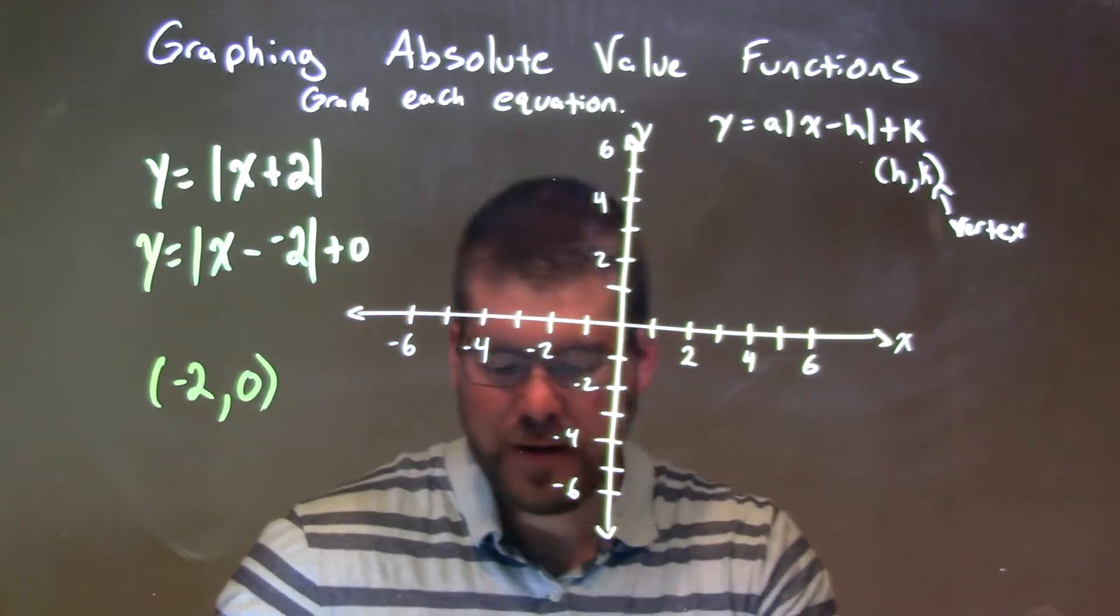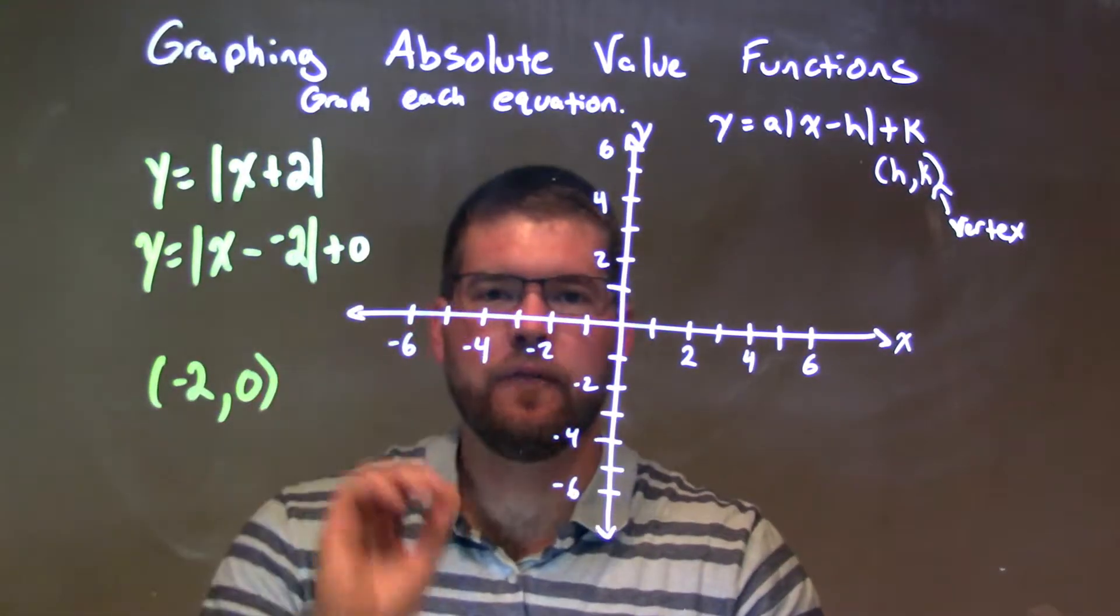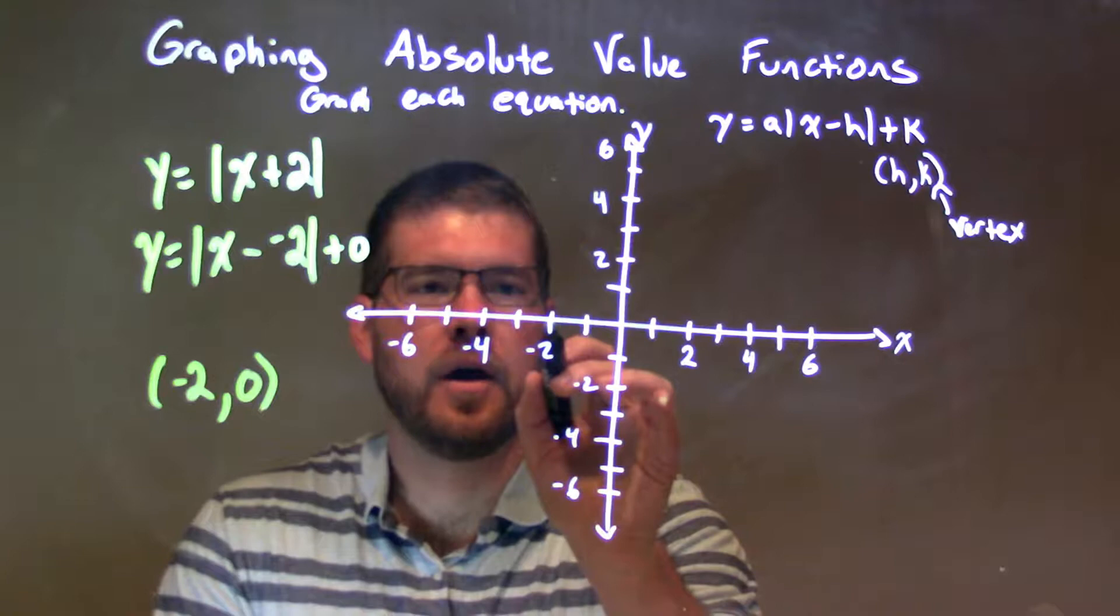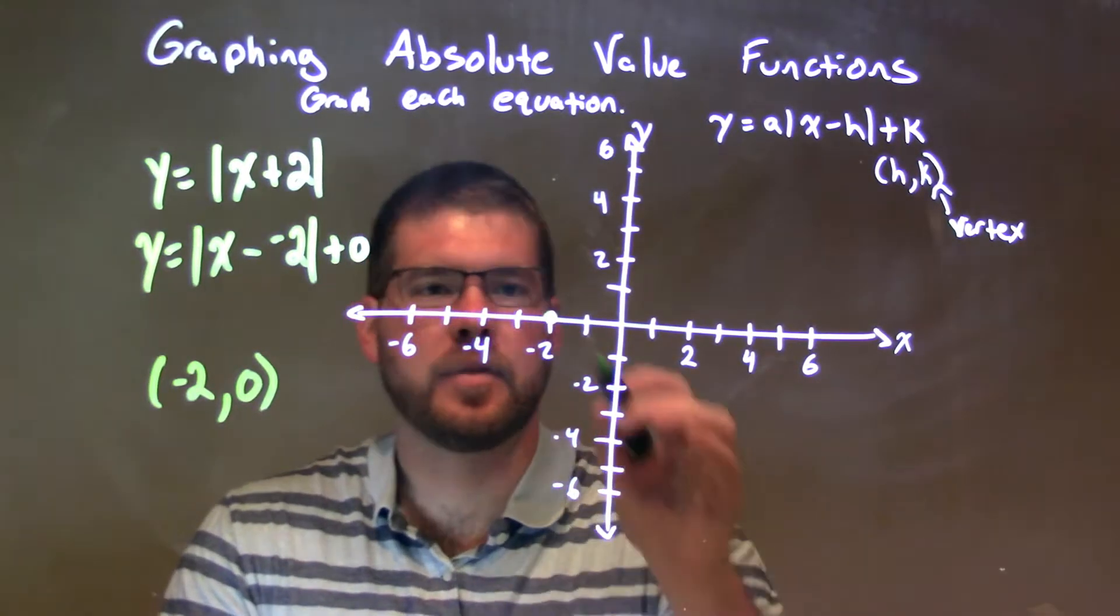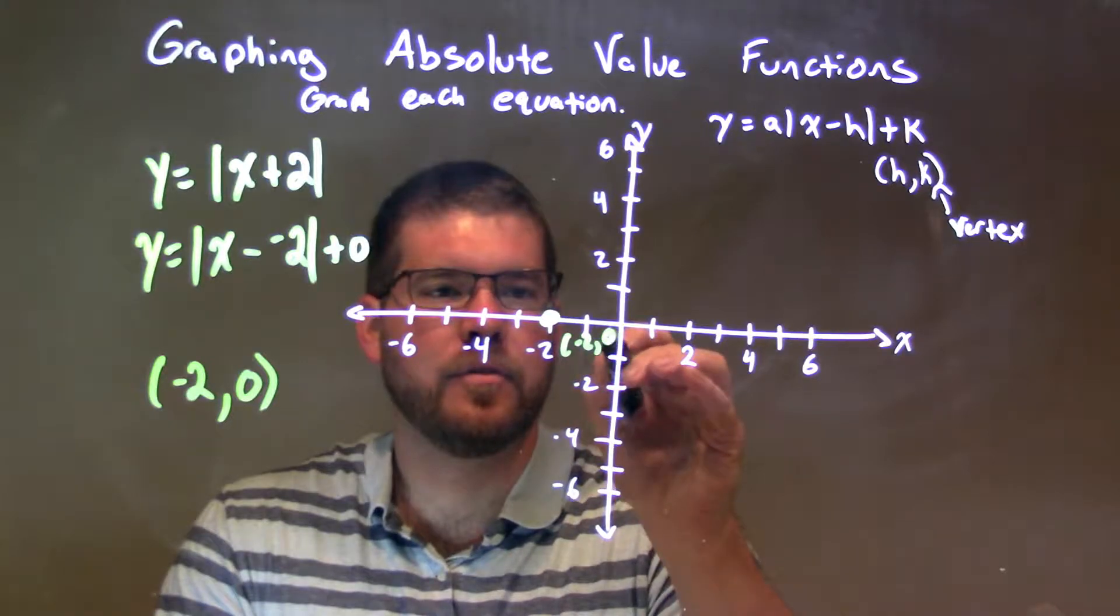So, now our coordinate point is negative 2 comma 0. That's where the vertex starts. So, negative 2, height of 0, we got a dot right there. So, now we've got the vertex at negative 2 comma 0.